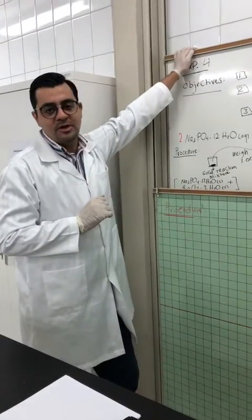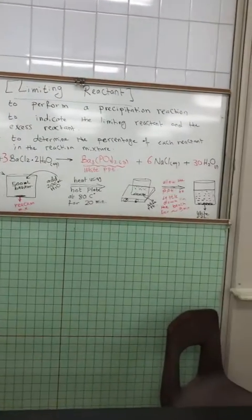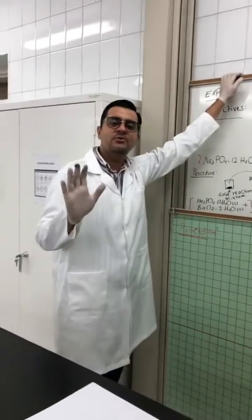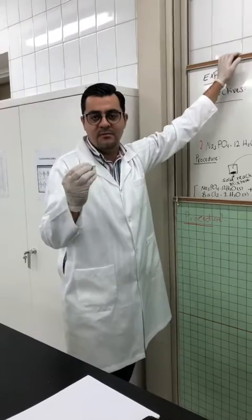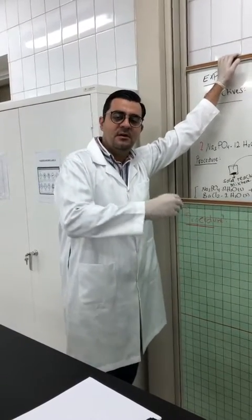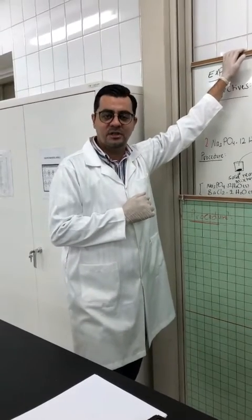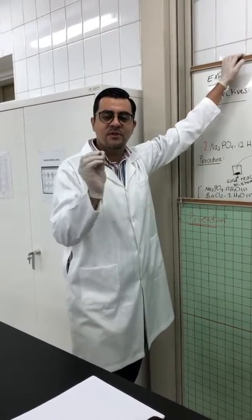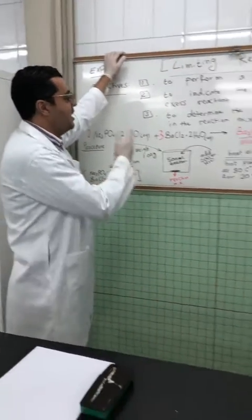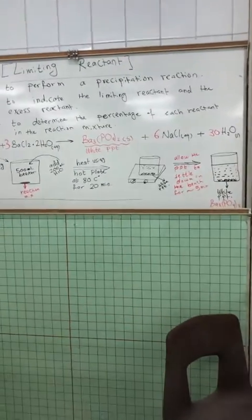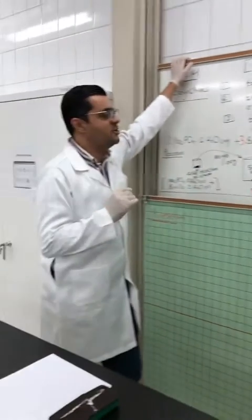The second objective is to indicate the limiting reactant and the excess reactant. Today we will start with two reactants — one of them will definitely be the limiting reactant and the second one will be the excess reactant. We should indicate which one is limiting and which one is excess. The last objective is to determine the percentage of each reactant in the reaction mixture.